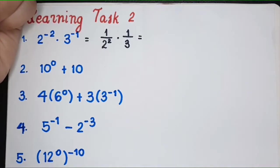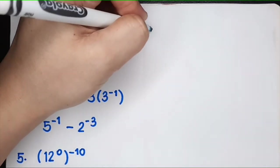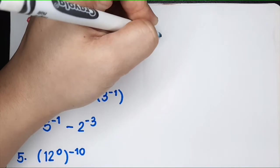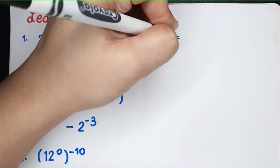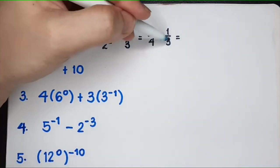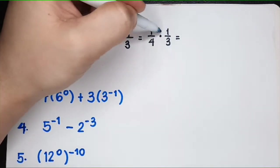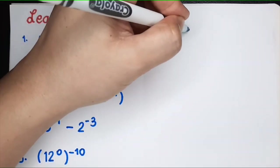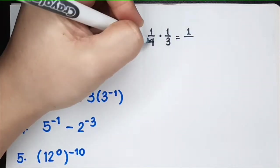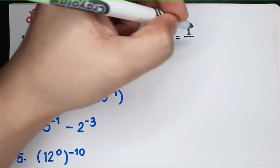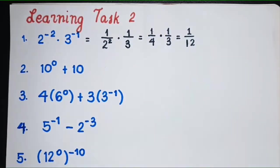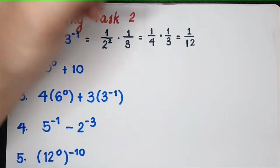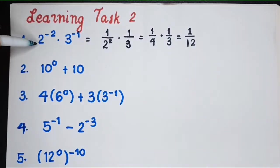What is 2 squared? That is 2 times 2, so you have 1 over 4 times 1 over 3. To multiply fractions, you multiply the numerators — 1 times 1 gives 1 — then multiply the denominators: 4 times 3 gives 12. So the final answer is 1 over 12. That's the single value equal to this expression.